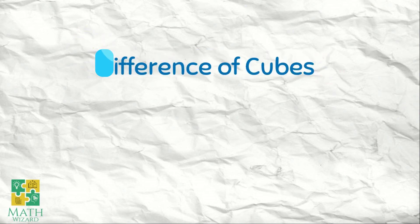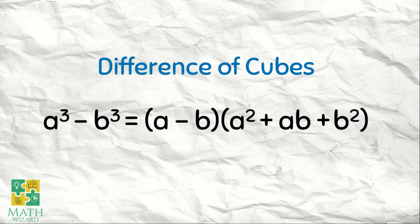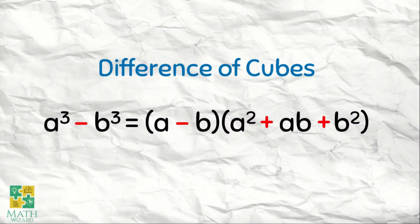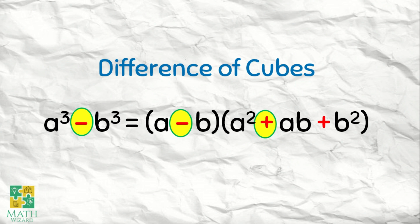Now, we move on to difference of cubes. Here's the formula: A cubed minus B cubed is equal to A minus B times A squared plus AB plus B squared. Take note of the sign. The first parenthesis is minus — kung ano yung sign sa given, if it's a difference, dapat yun din ang sign sa first parenthesis. Second parenthesis: it's a plus — opposite nung given. Kung yung given ay difference of two cubes, this would be a plus sign. And then the last one is also plus, kasi we raise the last term to squared — if we raise a certain number to squared, the sign is always positive. So: minus sign in the first parenthesis, the opposite which is plus in the second parenthesis, and always plus at the end.